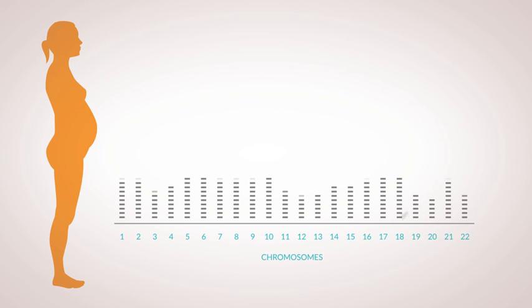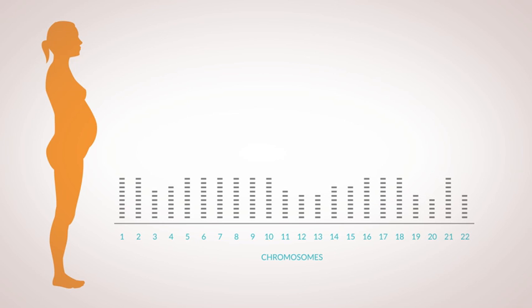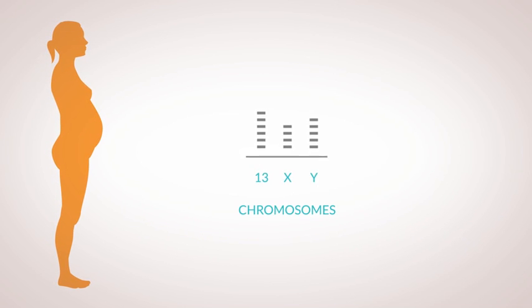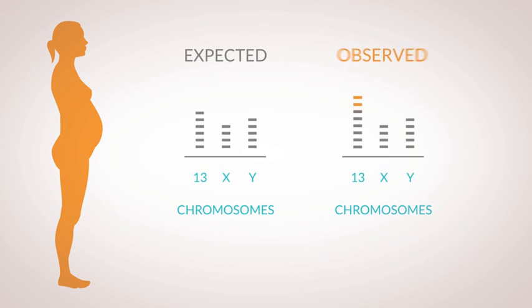These methods take the maternal blood sample and basically count the total number of chromosomes present. This approach has inconsistent amplification during sequencing that makes it difficult to determine any differences between the expected amount of DNA compared with the observed. It is especially problematic on chromosomes 13, X, and Y.